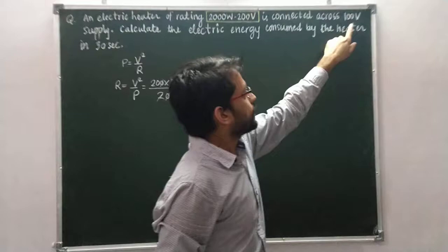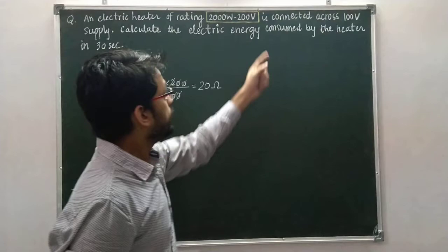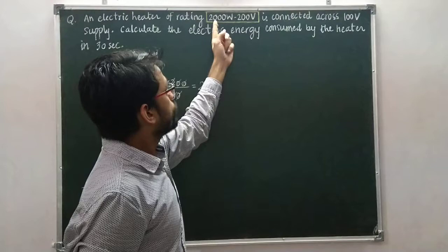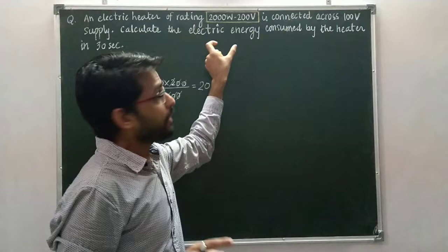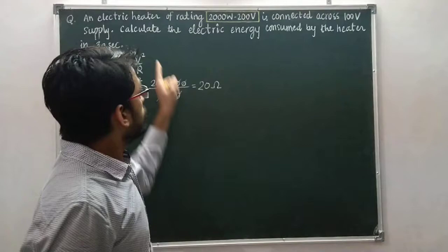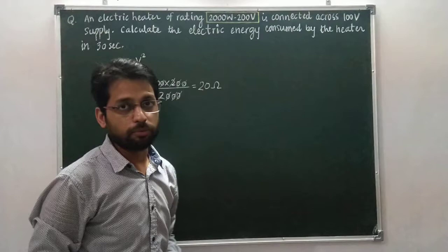So, the resistance of the electric heater is 20 Ohm. Now, this electric heater is connected across a 100 V supply. An important point to be noted: in the power rating it is given 2000 Watt and 200 V, which means the electric heater consumes 2000 Joules of energy in one second when connected across 200 V supply. But the heater is connected across 100 V supply instead of 200 V.